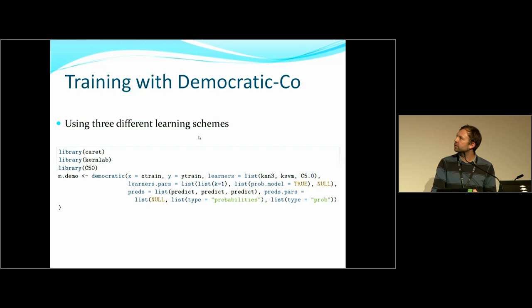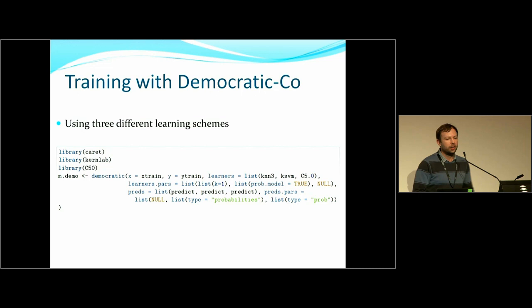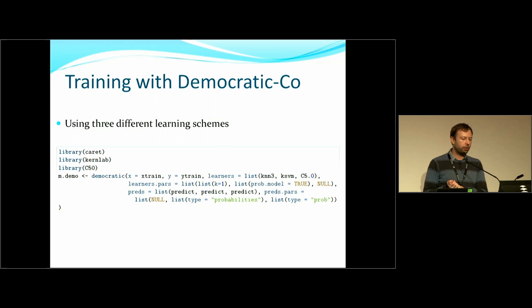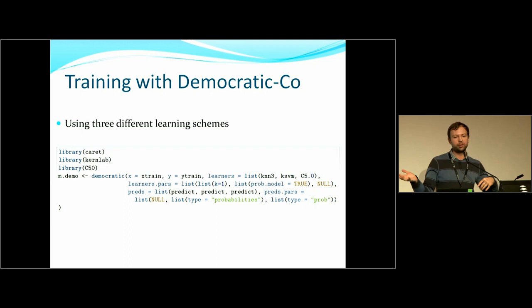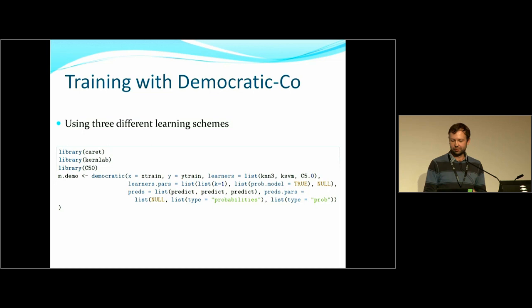For democratic co-learning, you specify three learners — for example a knn3, a ksvm, and a c5.0 — each with their own predict functions and parameters, and the method applies democratic co-learning in a semi-supervised way. If you want to mix a method that uses raw data with one that uses distance matrices, you need the generic interface to handle that kind of flexibility.